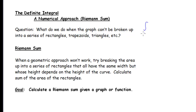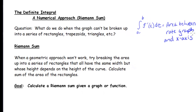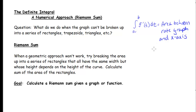When we're finding a definite integral, we have a lower limit and an upper limit. We're finding the definite integral of our rate graph, and this equals the area between the rate graph and the x-axis. We've seen examples where we can do this when we can break our function up into a series of rectangles, trapezoids, and triangles. But most curves don't allow us to do that, so we need an alternate method.